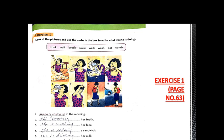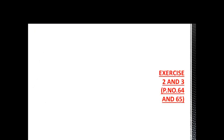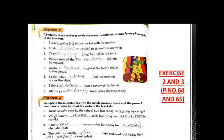Now move to page number 64, exercise number two. Complete the sentences with the present continuous tense forms of the verbs in the bracket. The first one is already done. So Joy is going to the market with his mother. See, here in the bracket is written only go, but we have to change to present continuous. So we add be verb is, and work plus ing. That means is, and go plus ing becomes going. So Joy is going to the market with his mother.